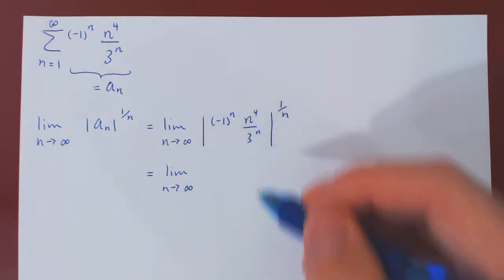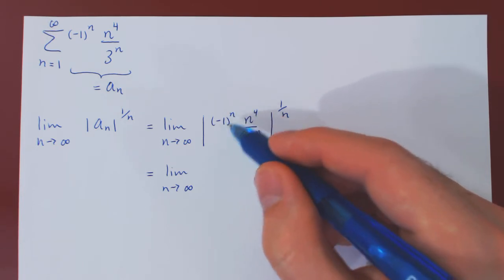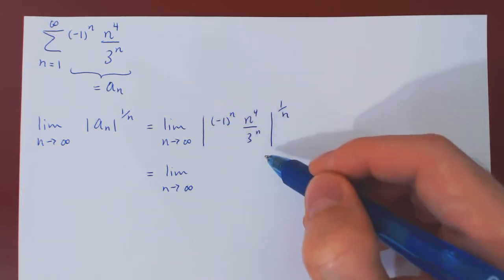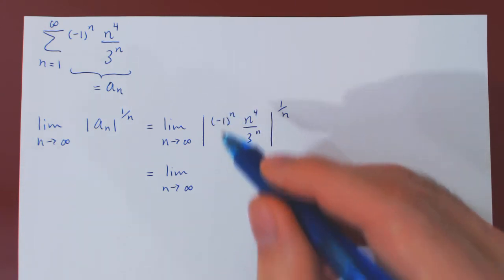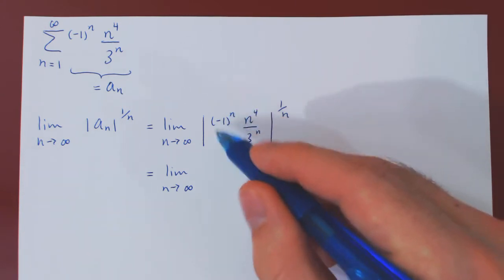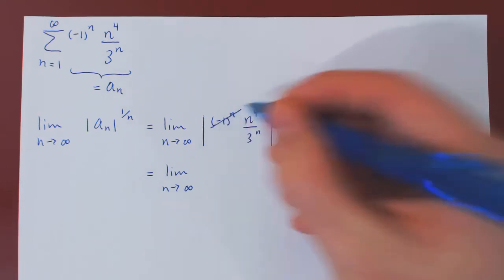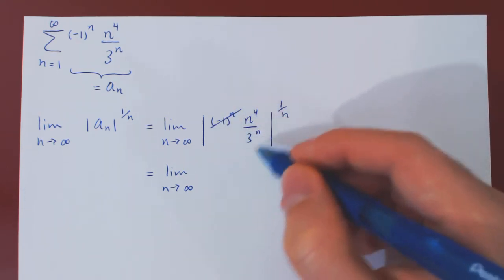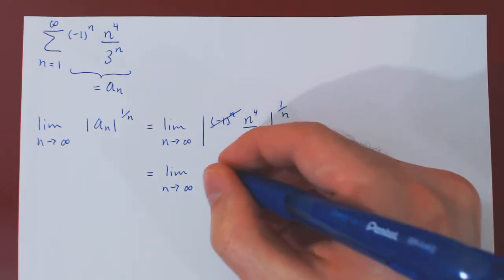Well, the absolute value function makes things positive. Look at the first term, this is negative 1 to the n, it's plus or minus 1, but in absolute value, plus or minus 1 is 1. So all we are left with is a multiple of 1, so we can ignore it. As everything else is positive, we can now drop the absolute value.